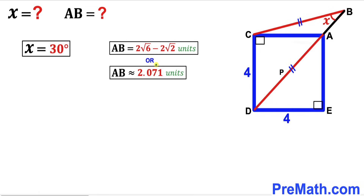AB ≈ 2.071 units. That's our final answer. Thanks for watching and please don't forget to subscribe to the channel for more exciting videos.